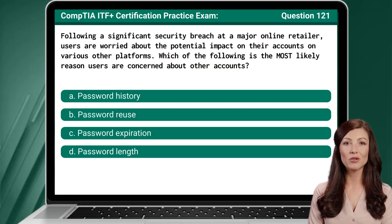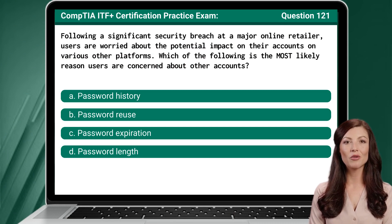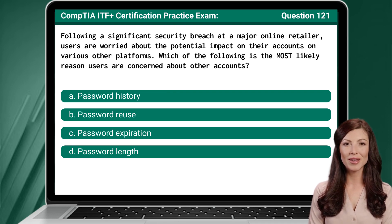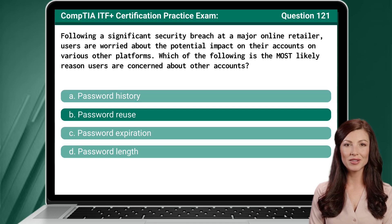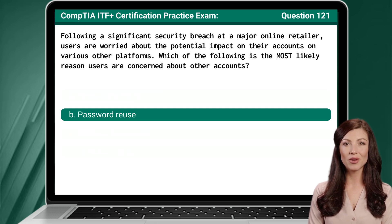Question 121. Following a significant security breach at a major online retailer, users are worried about the potential impact on their accounts on various other platforms. Which of the following is the most likely reason users are concerned about other accounts? The answer is B.